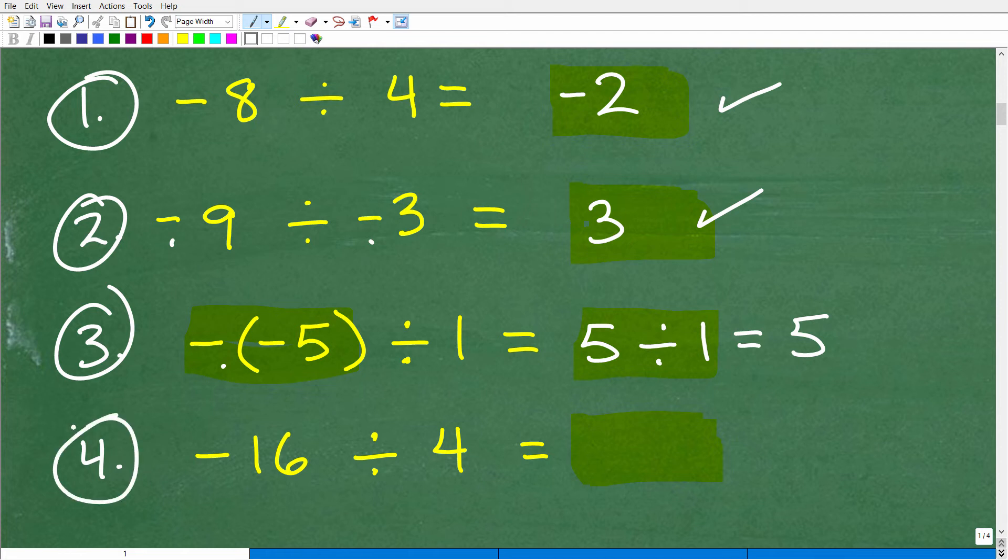Okay, so let's move on to our last problem. Here, I have negative 16 divided by a positive 4. Are the signs the same or different? Well, clearly, this is negative. This is positive. So, different signs mean the final answer is going to be negative. So, just do the division now. 16 divided by 4 is 4. So, our final answer is negative 4.